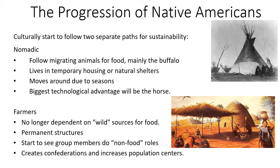With large populations becoming sedentary and increasing their population centers, people started to create confederations with other tribes and also began to trade. The Aztecs and Mayas are perfect examples of this progression. In Texas, we will see this somewhat with the Caddo tribe in Northeast Texas.